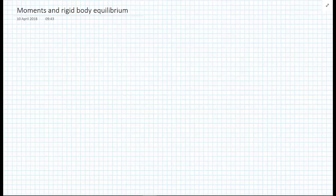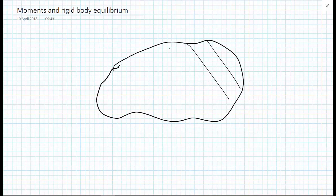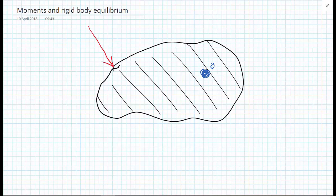First thing we need to do is define what we mean by a moment. We're going to draw a rigid body that cannot deform. We'll think of one point on this body, call it point O, and the body can be subjected to a force F.